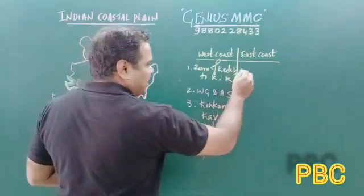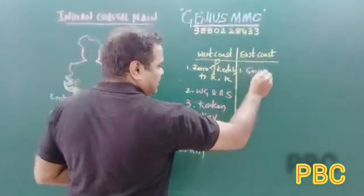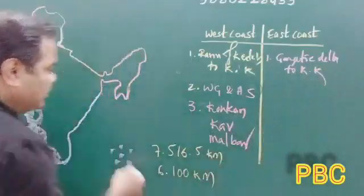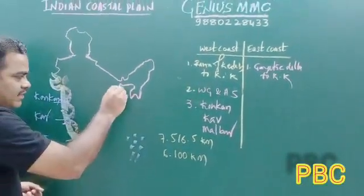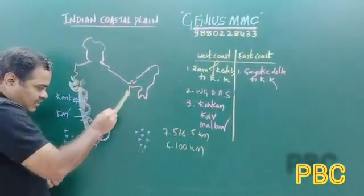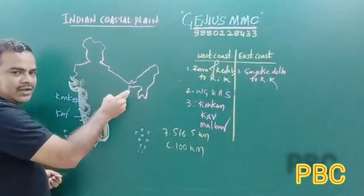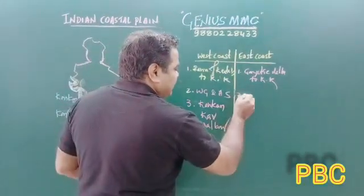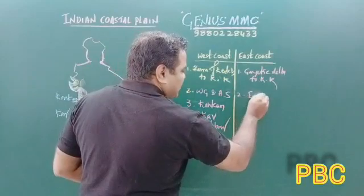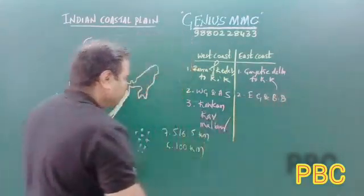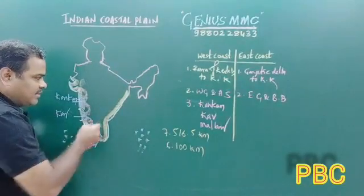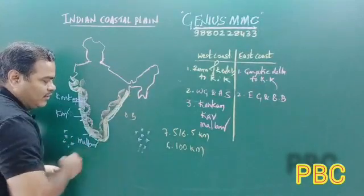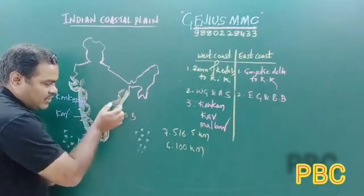The East coastal plain extends from the Gangetic Delta to Kanyakumari — from West Bengal to Kanyakumari. It is located between the Eastern Ghats and the Bay of Bengal.